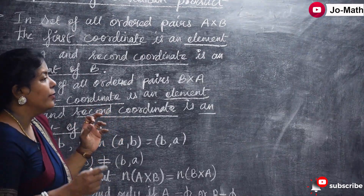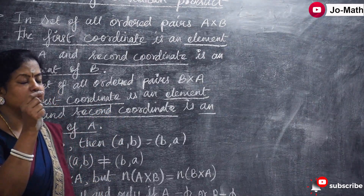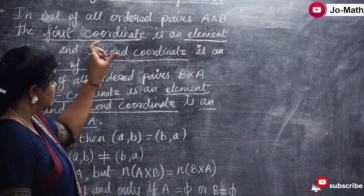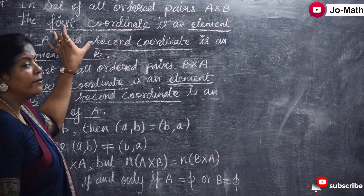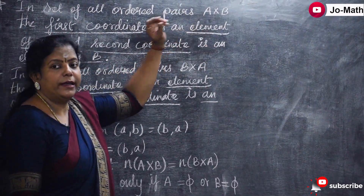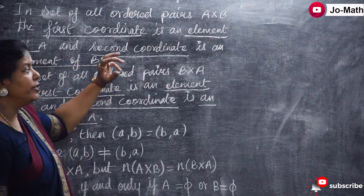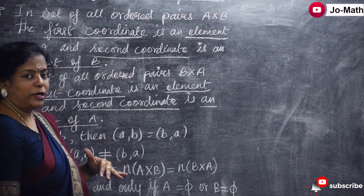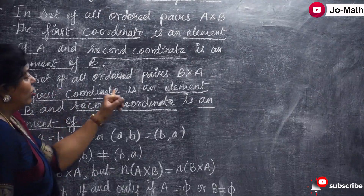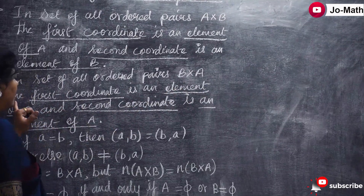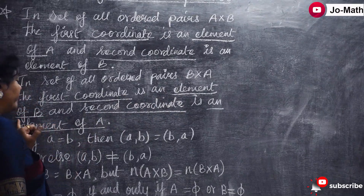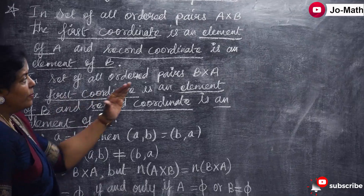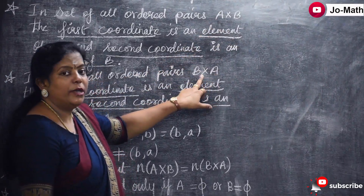A cross B is a set of all ordered pairs. The first coordinate is an element of A and the second coordinate is an element of B. So in ordered pair (a, b): the first coordinate belongs to set A and the second coordinate belongs to set B. Now if you compare A cross B and B cross A, they are not the same.